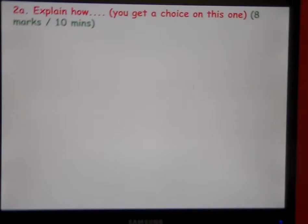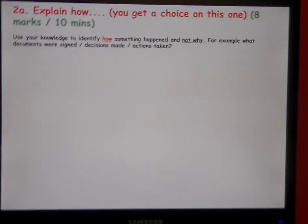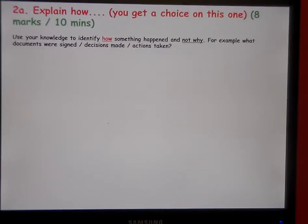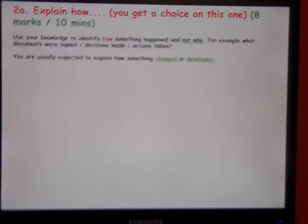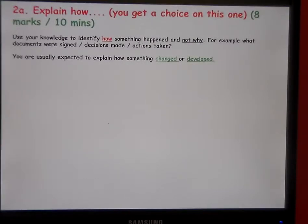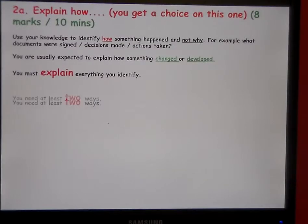Question 2A, explain how. And you'll get a choice, either 2A or 2B. So you've got to use your knowledge to identify how something happened and not why. You're usually expected to explain how something changed or developed. And you've got to explain everything you identify. And again, two ways.